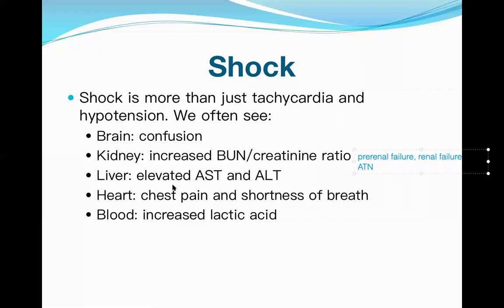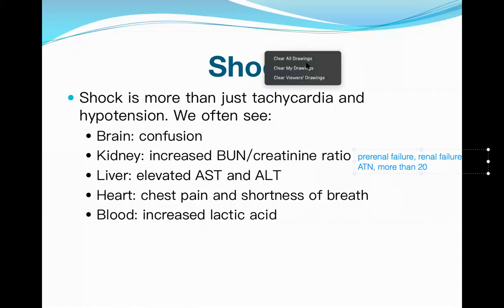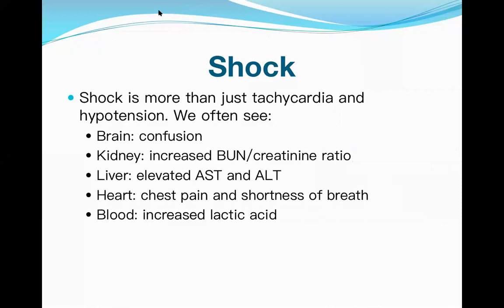One important point: if the BUN-to-creatinine ratio is more than 20, it is highly suggestive of pre-renal failure, because in pre-renal failure BUN is much more elevated than creatinine. If this ratio is less than 20 — for example, around 10 to 15 — it is highly suggestive of intrinsic renal failure or ATN.